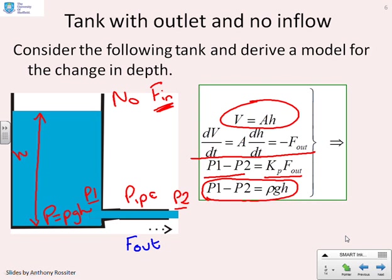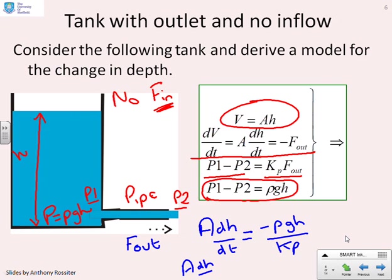However, we've also noted that p1 minus p2 is going to be ρgh. So I can now put these different things together, and I can write a dh/dt equals minus f out, and minus f out is going to be minus ρgh over kp. Therefore you can see I've got a dh/dt plus ρg over kp into h equals 0. And what you notice, it's a first order differential equation, the same type of model that we've been deriving before.